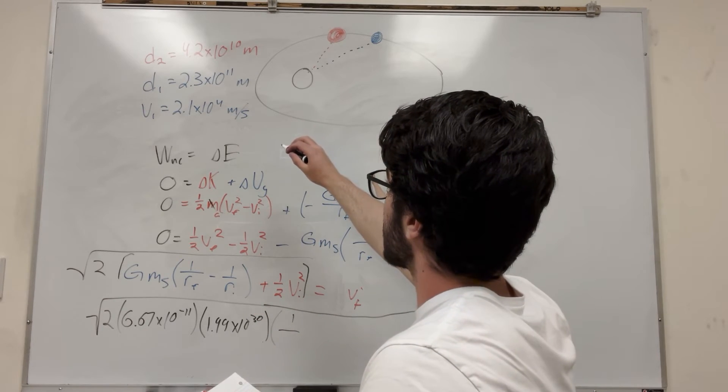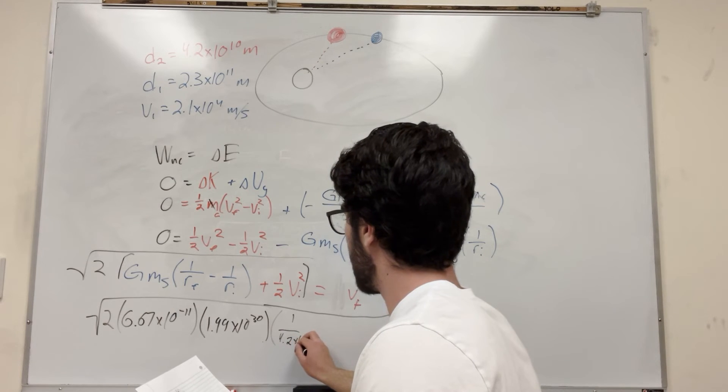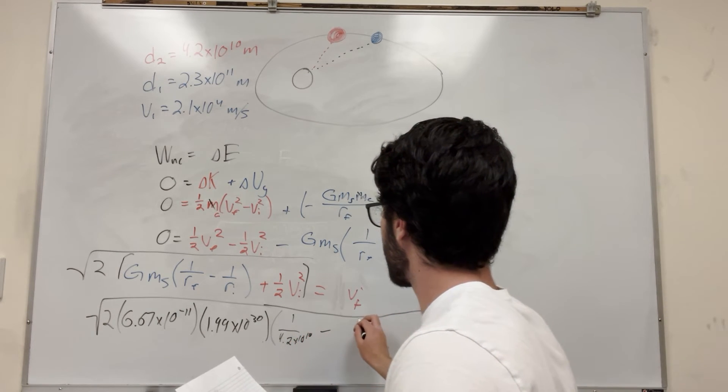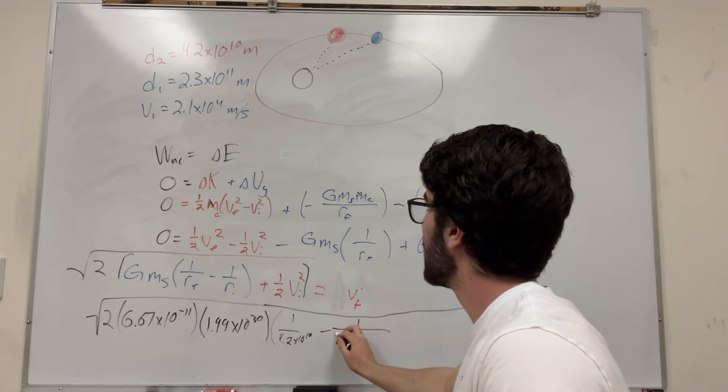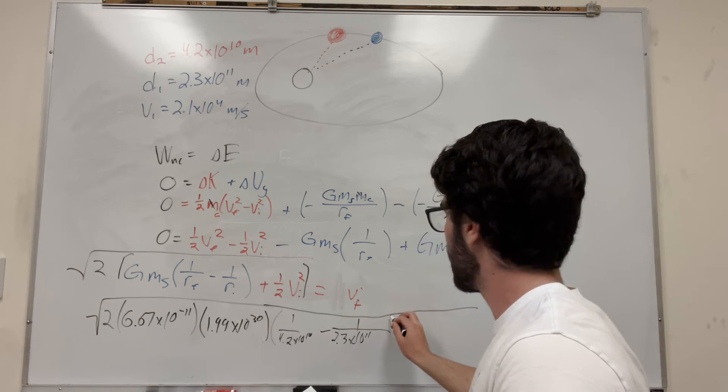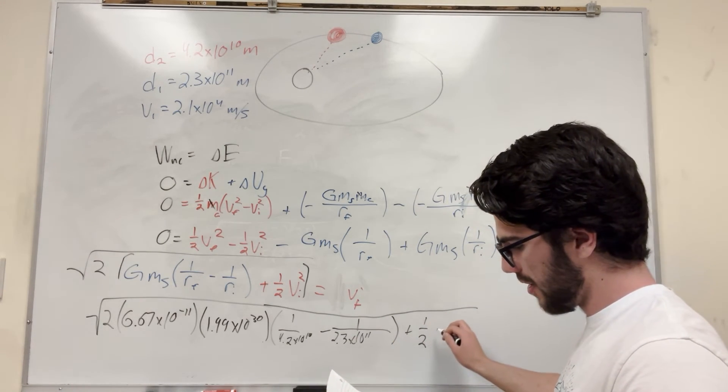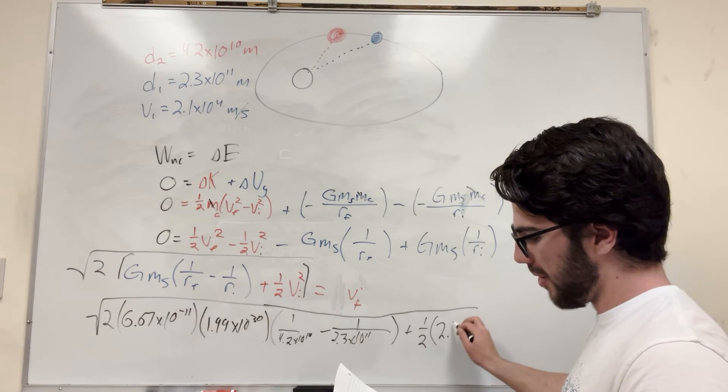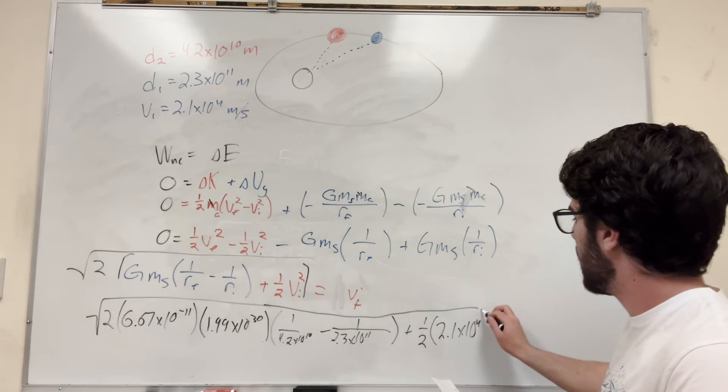So radius final is distance 2. So this would be 4.2 times 10 to the 10 minus 1 over radius initial, which is distance 1, 2.3 times 10 to the 11. And then if you're going to take this and add 1.5, and then this is 2.1 times 10 to the 4th. That's its initial velocity. And then square all that.